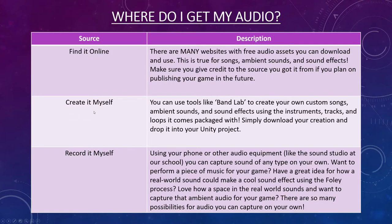You can also create it yourself. You can use tools like Band Lab, which we've already used in our course, to create your own custom songs, ambient sounds, and sound effects using the instruments, tracks, and loops it comes packaged with. Once you've created something, simply download your creation and drop it into your Unity project — and voila, you have audio. Or finally, you can record it yourself. Your phones have recording applications, and we also have audio equipment available at school, including a sound studio and microphones, or you may have your own access to audio equipment.